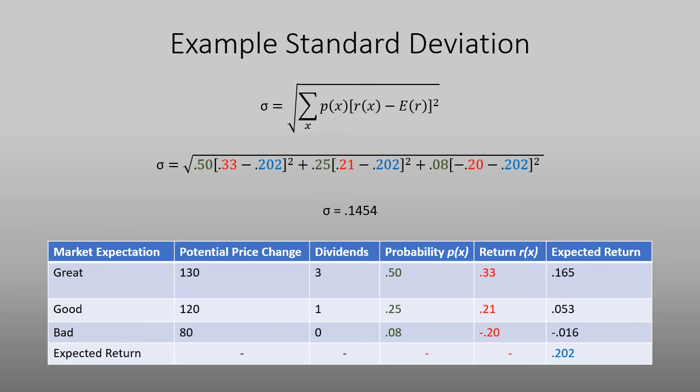So let's see how these numbers fit into that formula by using the great market expectation. So the first number we're going to start off with is the probability. So the great market expectation has a probability of 0.5. The next number is going to be the return. So the return that we calculated in the previous section to be 0.33. Now we're going to subtract that from our portfolio's expected return of 0.202 and then square that.